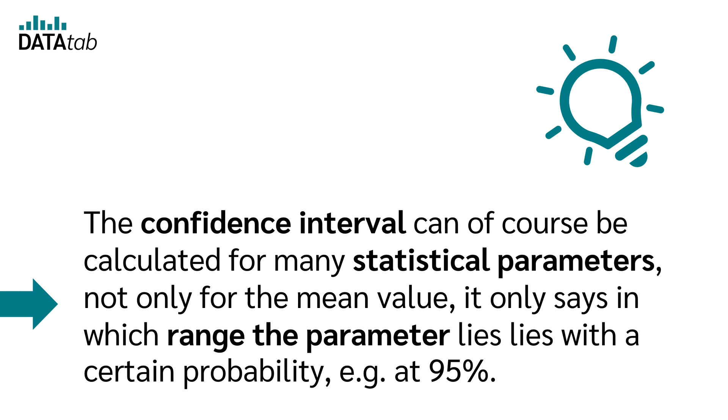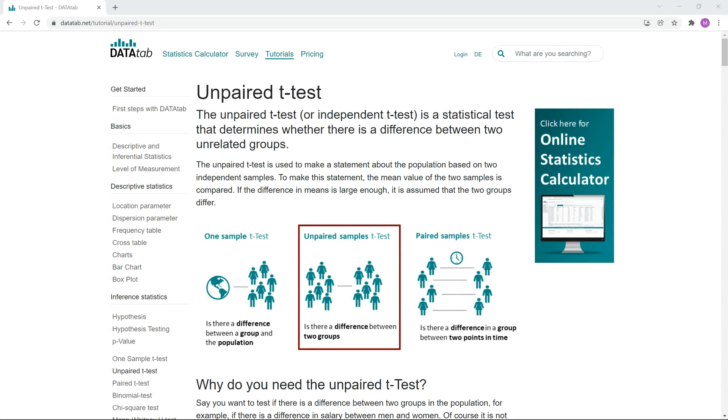To sum up, the confidence interval indicates in which range the parameter lies with a certain probability, for example, a probability of 95%. I hope you enjoyed the video.